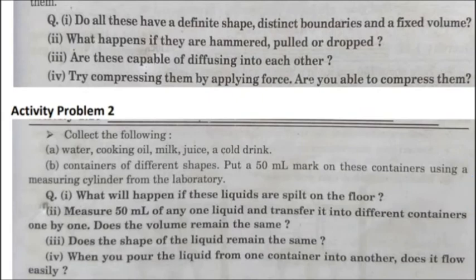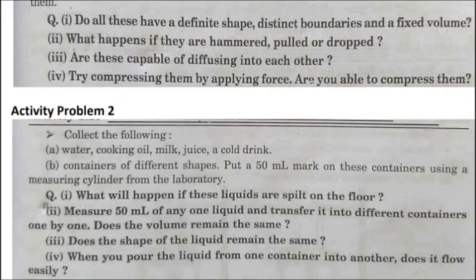Activity two: Collect water, cooking oil, milk, juice, and containers of different shapes. Put a 50 ml mark on these containers using a measuring cylinder. Questions: One, what will happen if these liquids are spilled on the floor? Two, measure 50 ml of any one liquid and transfer it into different containers one by one — does the volume remain the same? Three, does the shape of the liquid remain the same? Four, when you pour the liquid from one container into another, does it flow easily? Answer these questions in your notebook.